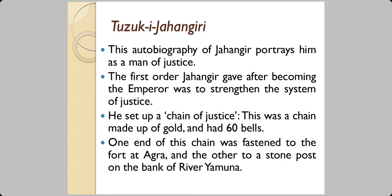The autobiography of Jahangir — the biography he wrote about himself — is Tuzuki Jahangiri, which portrays him as a man of justice. The first order he gave after becoming emperor was to strengthen the system of justice. He set up something known as a chain of justice: a chain made of gold, very long, with 60 bells on it. One end was fastened to the fort in Agra and the other to a stone post on the bank of the river Yamuna. Anybody who sought justice could pull the chain, ring the bells, and get the attention of the emperor.